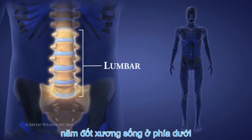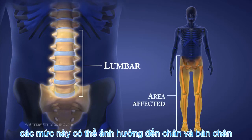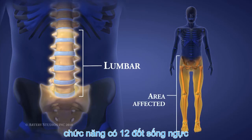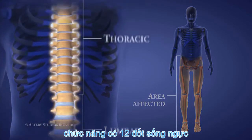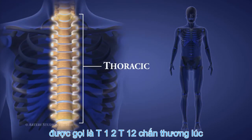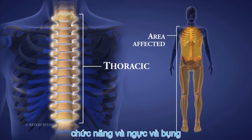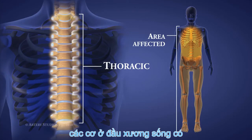The 5 lumbar vertebrae in the lower back are called L1 to L5. Injuries at these levels can affect leg and foot function, as well as the chest and abdominal muscles.